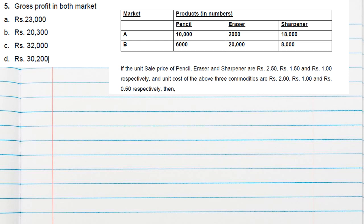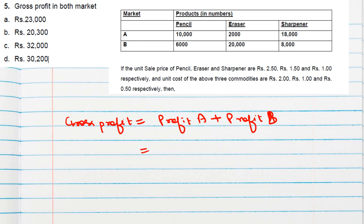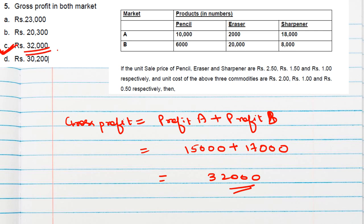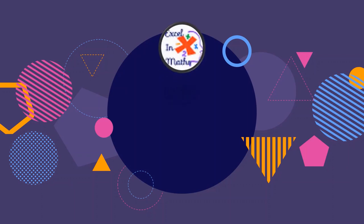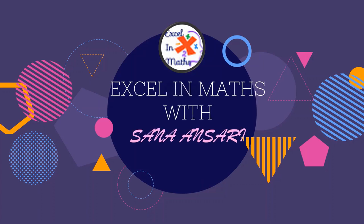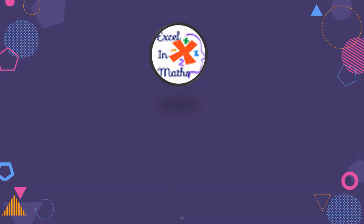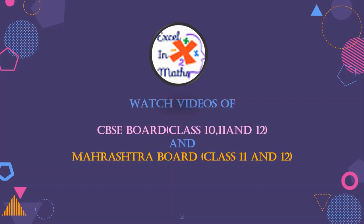The next question asks for gross profit in both markets. Gross profit means total profit across both markets: profit in A plus profit in B = 15,000 + 17,000 = 32,000, which is option C. So like this we can calculate cost and profit using matrices. Thank you.